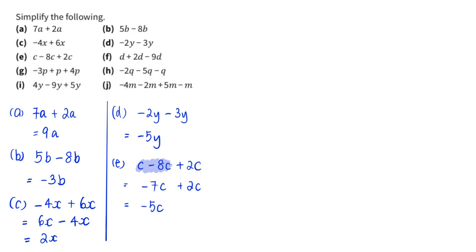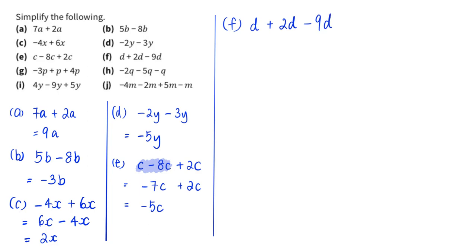Let's move on to part f: d plus 2d minus 9d. You can do it step by step from left to right. d plus 2d gives me 3d, and 3d minus 9d gives me negative 6d.